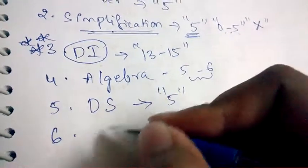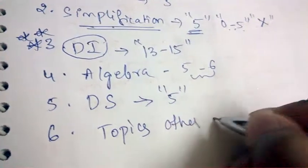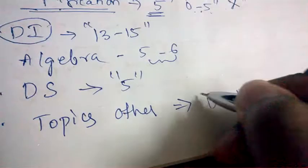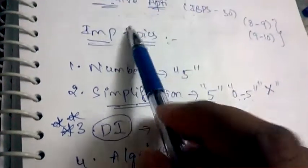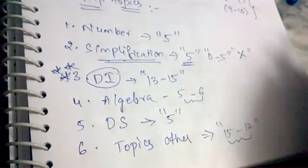There are few other topics which are like miscellaneous other topics. From those other topics, 15 to 17 questions will be asked. So these are few important topics from Quantitative Aptitude for IBPS SO Prelims exam with their weightages.